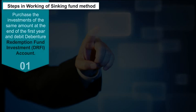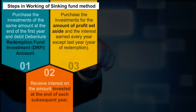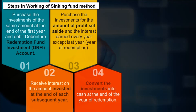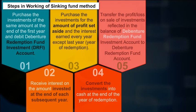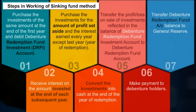Purchase investments of the same amount at the end of the first year and debit debenture redemption fund investment account. Receive interest on the amount invested at the end of each subsequent year. Purchase additional investments for the amount of profit set aside and the interest earned every year except the last year. Convert the investments into cash at the end of the year of redemption. Transfer the profit or loss on sale of investments to the debenture redemption fund. Make payment to debenture holders. Transfer the debenture redemption fund account balance to general reserve.